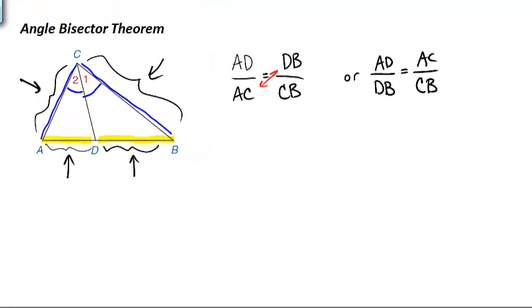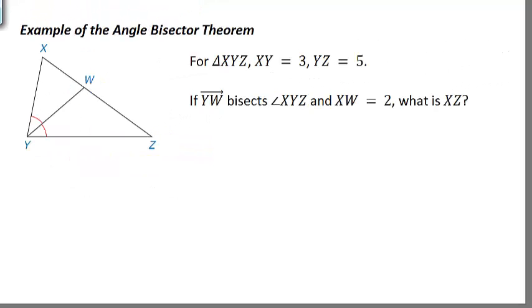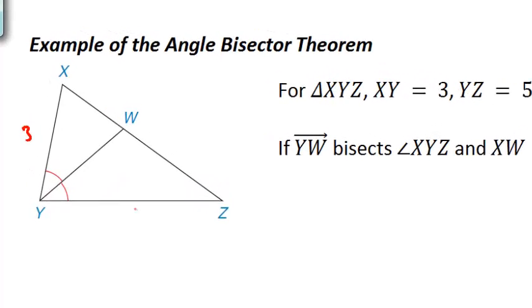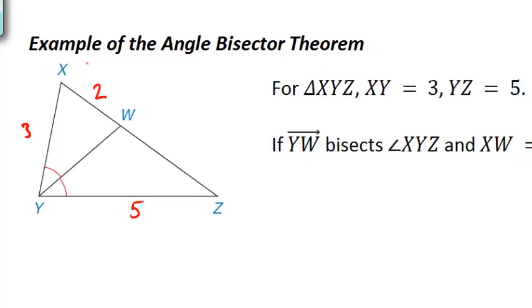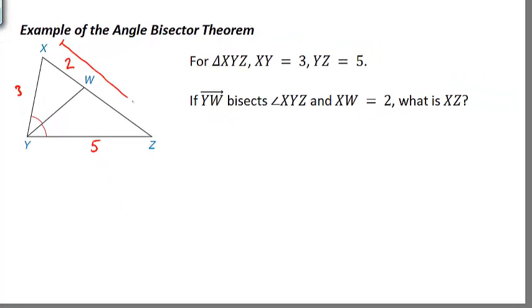Here we've got triangle XYZ. The problem tells us that XY equals 3, YZ equals 5, and then it goes and says if YW bisects angle XYZ and XW is 2, what is the length of XZ?